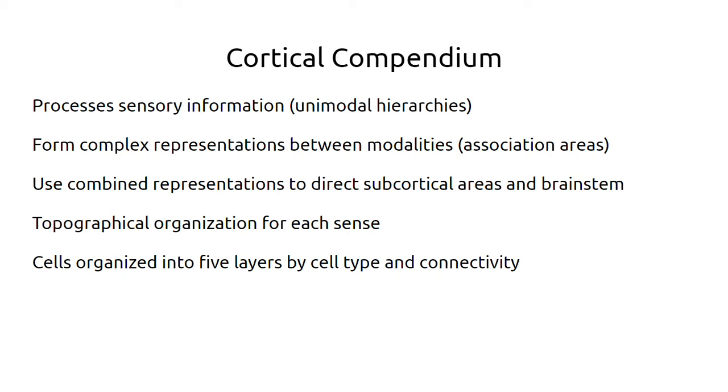But then as you get into more abstract areas, that topographical organization doesn't really exist. Because again, things are very abstract, so it's hard to know what a topographical organization would even be. And then we've also got this fact that across the whole cortex, the cells are organized into these nice five or six layers by cell type and connectivity, and that seems to be incredibly consistent across these systems.